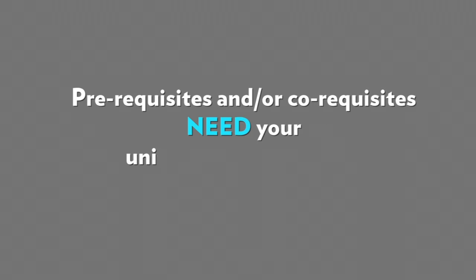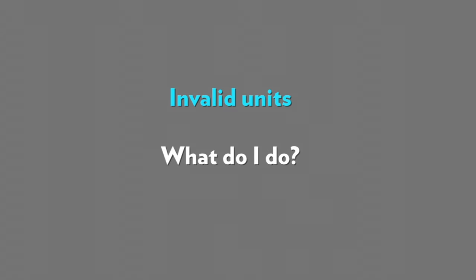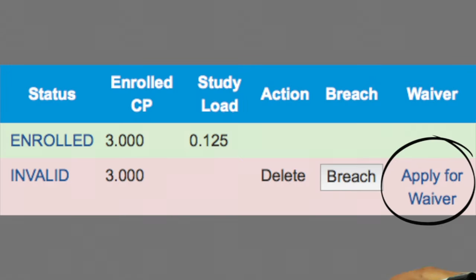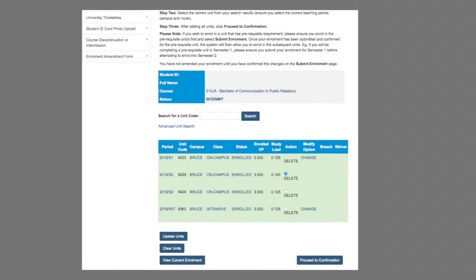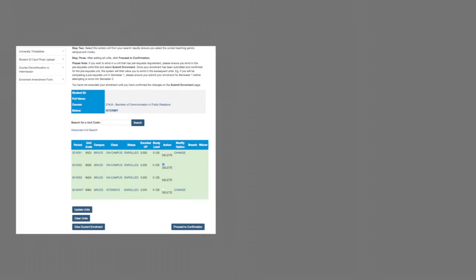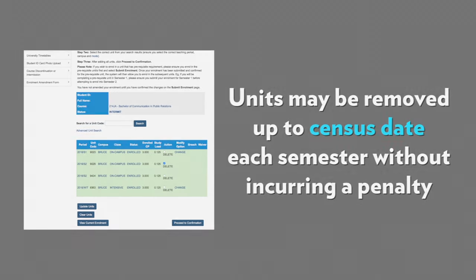Some units will require your unit convener's approval before you can enrol — this might be because of a prerequisite or co-requisites. If one of your units becomes invalid during the enrolment process, click on the 'apply for waiver' button to ask for the unit convener's approval. To remove units, go through the same self-enrolment process. You can remove units without penalty up to census date for each semester.